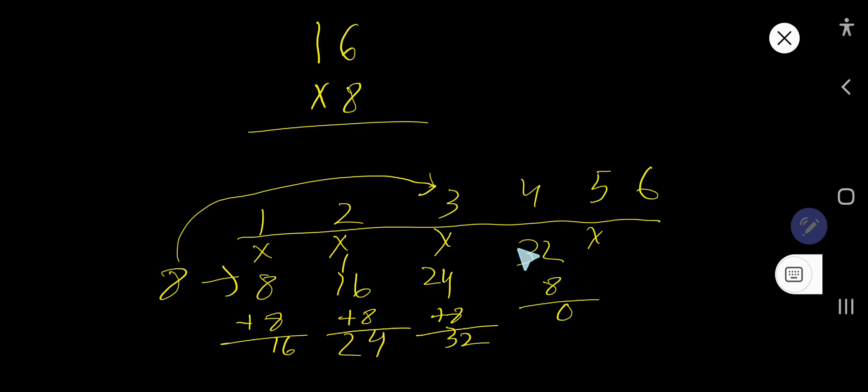1 plus 3, 4. 40, right? 40. Then 8 times 6 equal to what? Just add 8. 48.